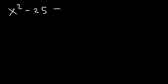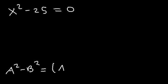Let's start with binomials, or two terms. If we have the expression x squared minus 25 is equal to 0, how can we factor it in order to solve for x? We can use the difference of perfect squares. If you have an expression in the form a squared minus b squared, you can express it as a plus b times a minus b.